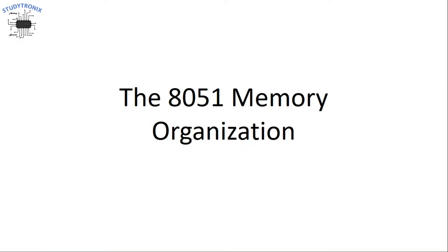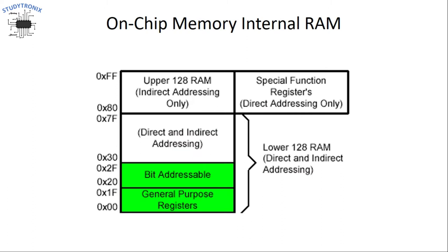Welcome. In this video we'll see the memory organization of 8051. As we know, there are two types of memory in 8051. One is ROM, which is used for storing the program or code memory, and the other one is RAM, which is used for storing temporary data. The capacity of ROM is 4 kilobytes in 8051 and the capacity of RAM is 128 bytes.